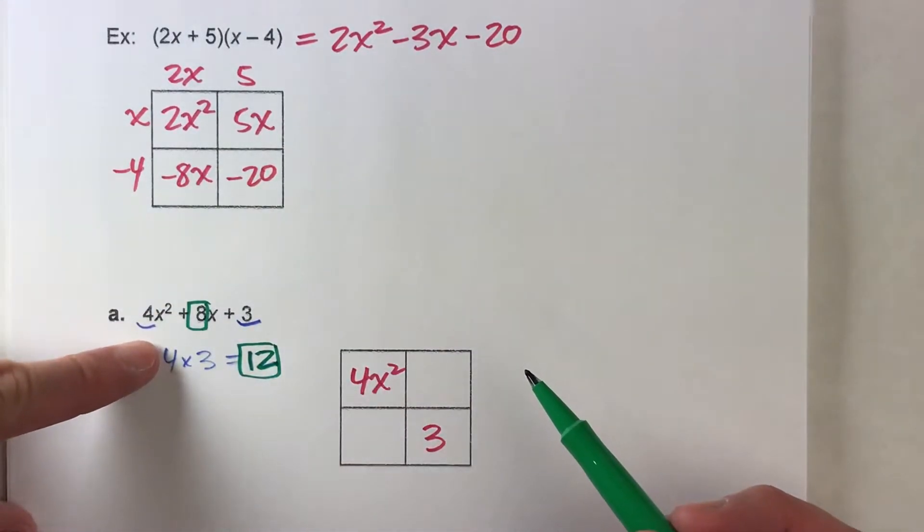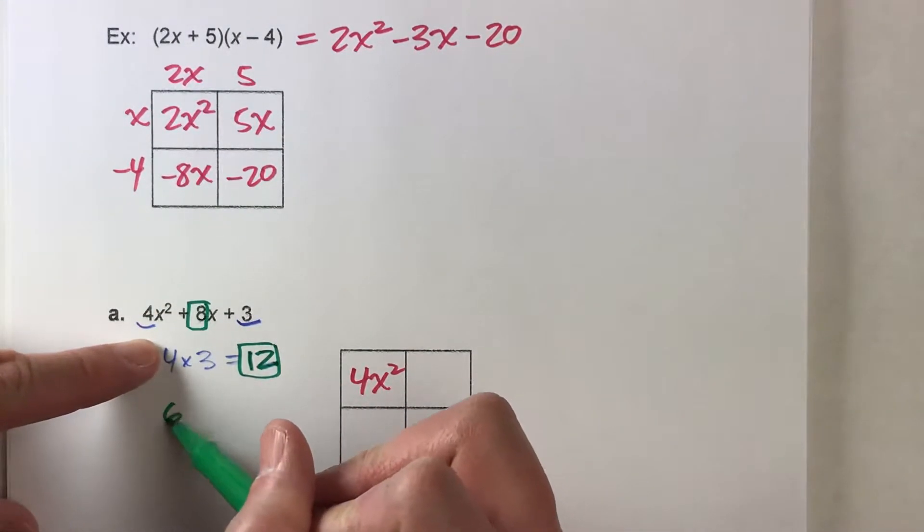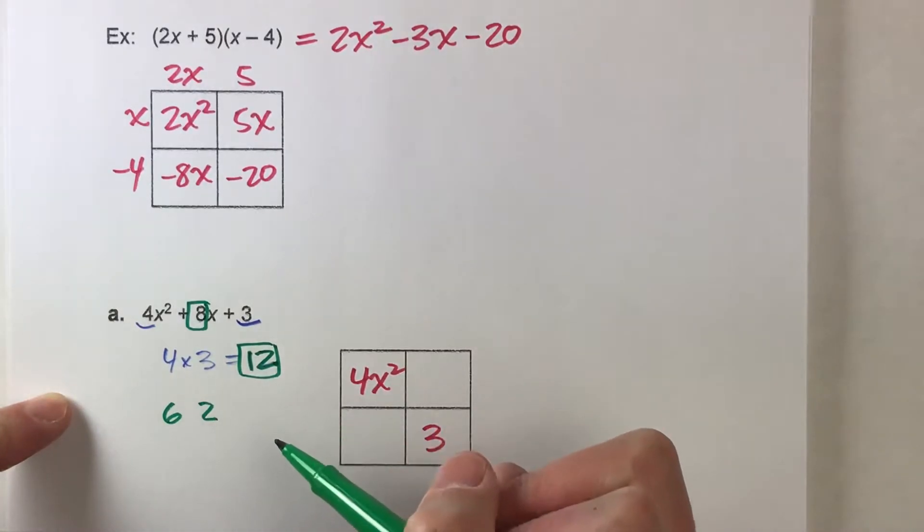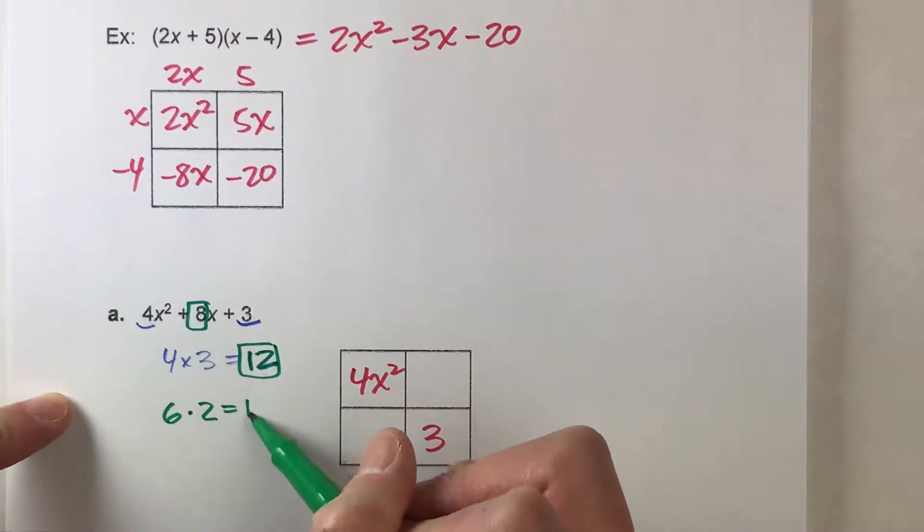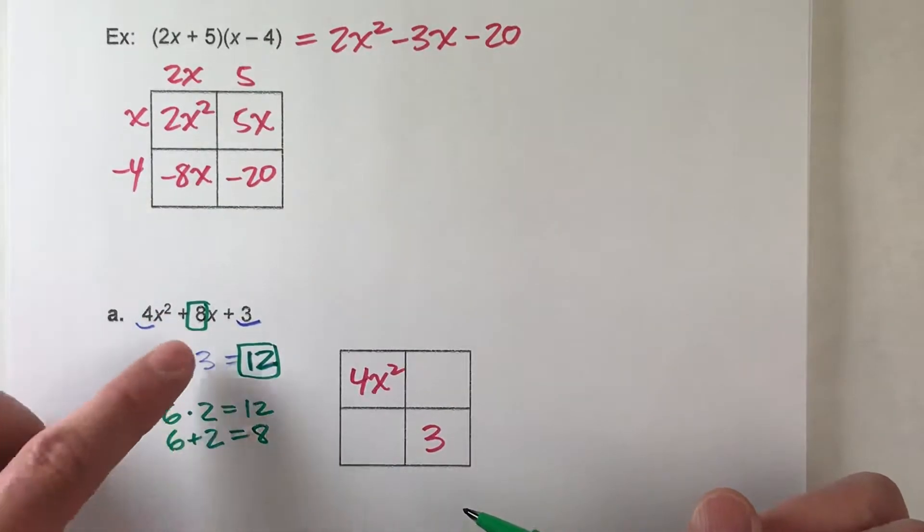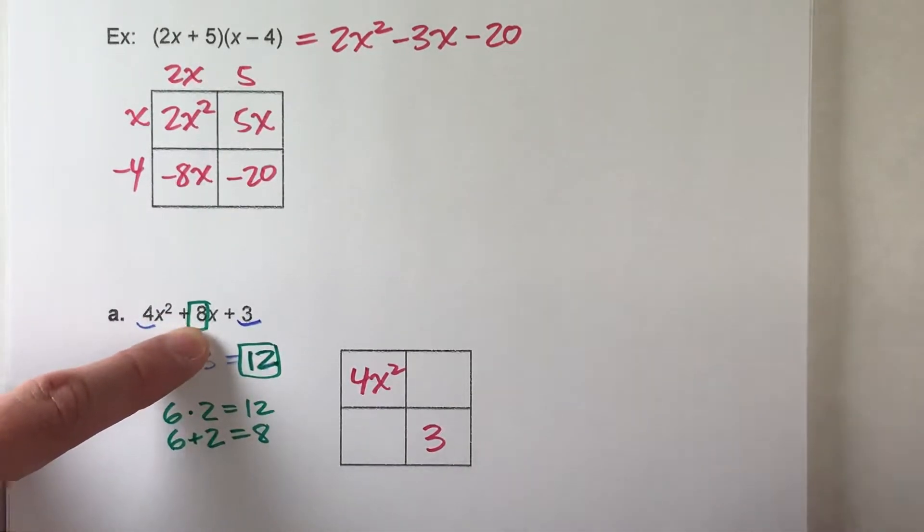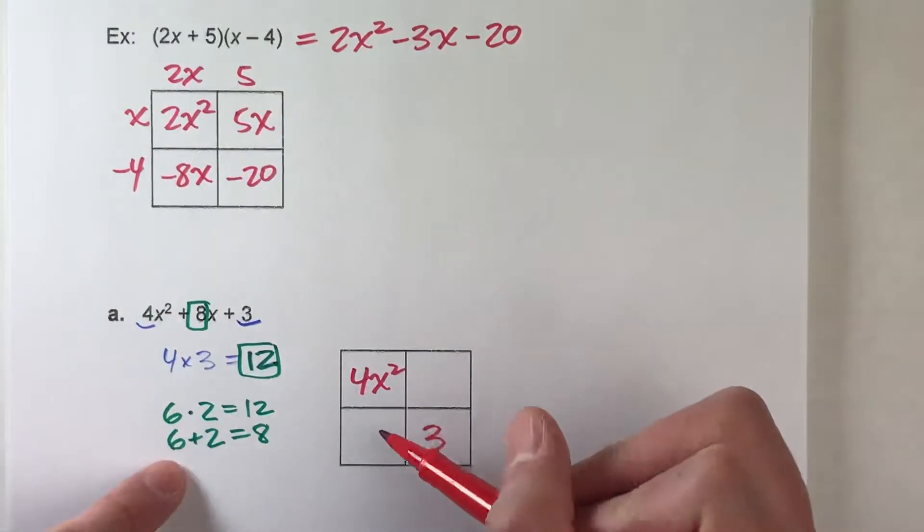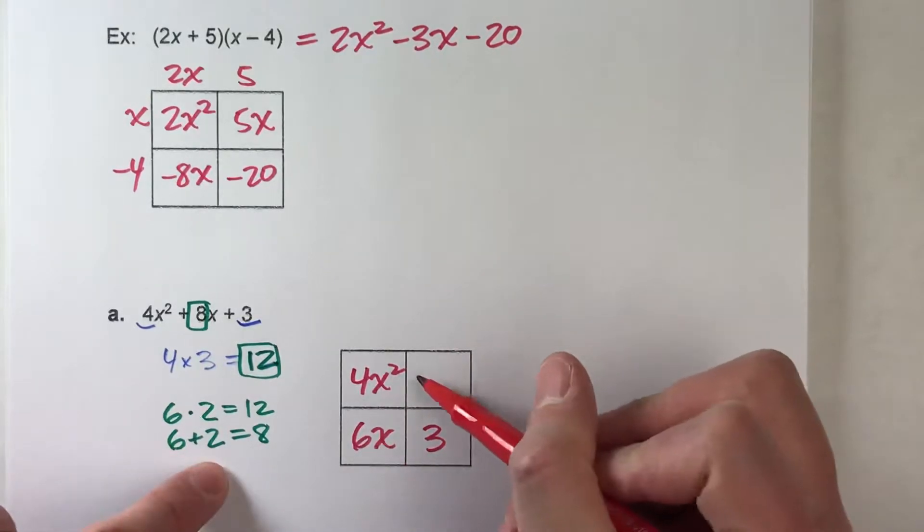And if you think about it for a little while, you know it's got to be 6 and 2. Because 6 times 2 is 12, and 6 plus 2 is 8. So we're going to break this 8x up into 6x and 2x.